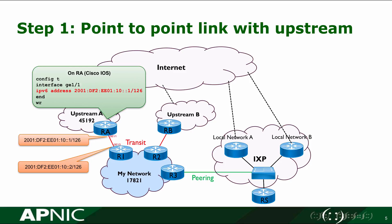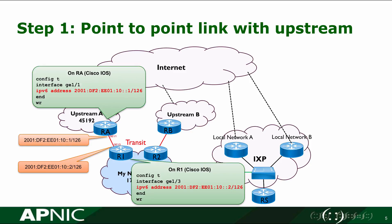To configure our interface, this is the Cisco IOS CLI on the router. We get into interface GE 1.3, put the IP address in, then exit the configuration mode and write to save the configuration. After the configuration we need to do a ping test to check reachability. If you are using other platforms such as Juniper or Huawei, these are the equivalent commands.